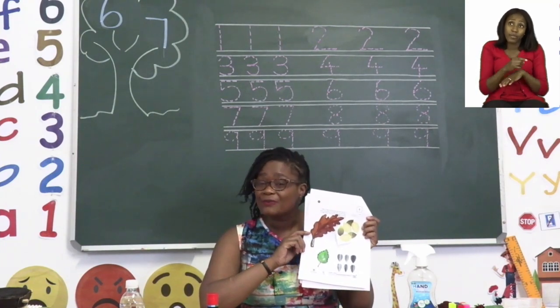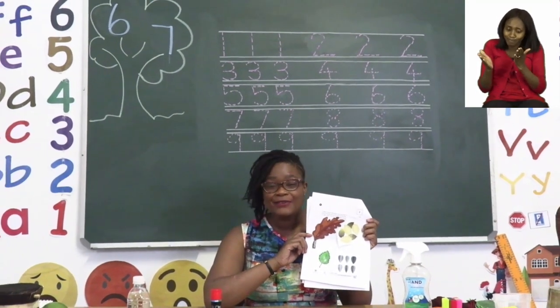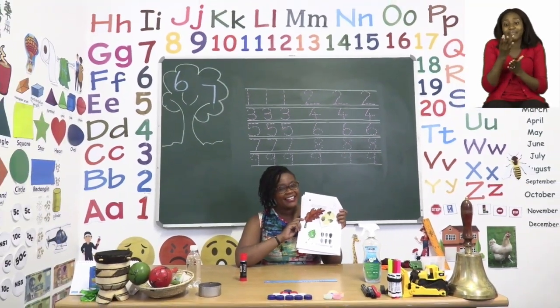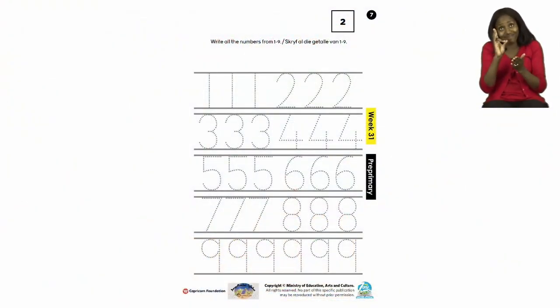When you are done with that one, you can move to the next page. Page seven. On page seven, we are going to be tracing. And the tracing we are going to do today is for numbers. Now, which numbers can you see?